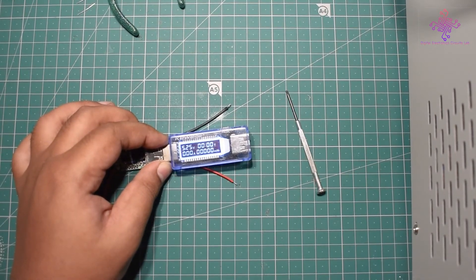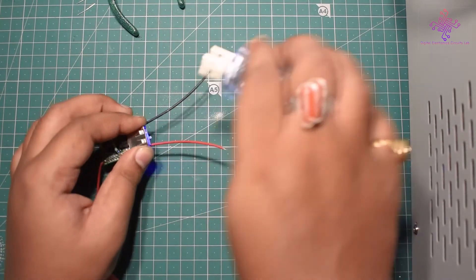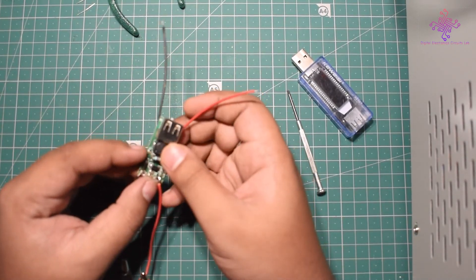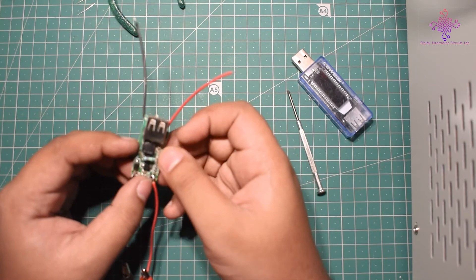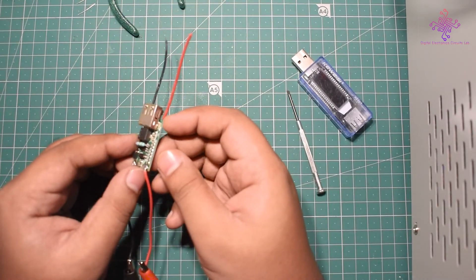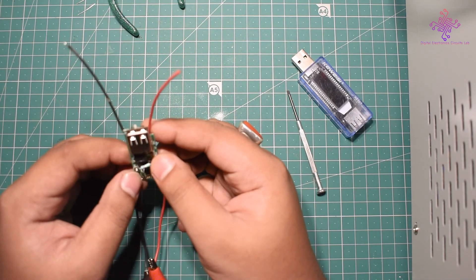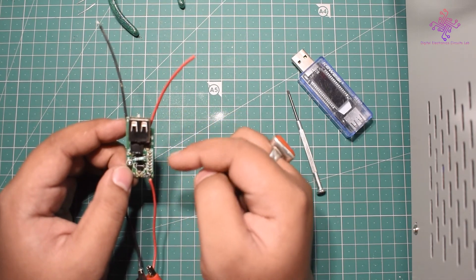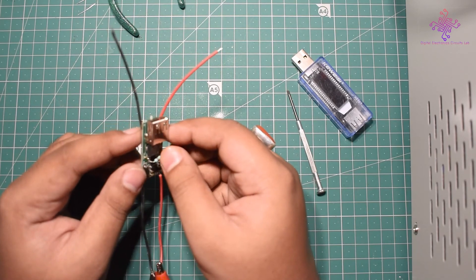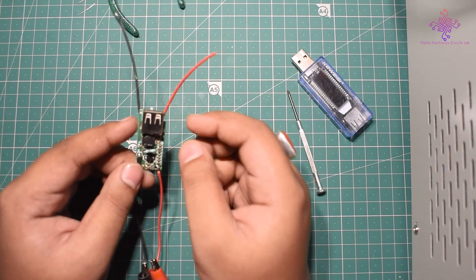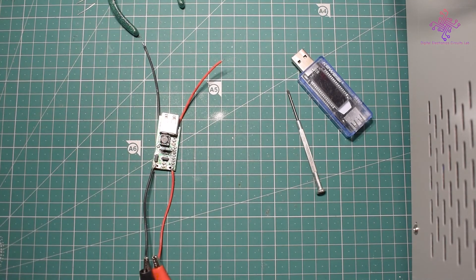So somehow I have managed to fix this USB power supply, but the problem is that I have to use this resistor and this should not fall apart. Although I have soldered properly, I'm not sure how long it's going to stay there. Anyway, that's all for this video. If you enjoyed this video, give me a thumbs up and make sure to subscribe to my channel. I have plenty of videos on electronics, so you can check those out. I will see you in my next video.